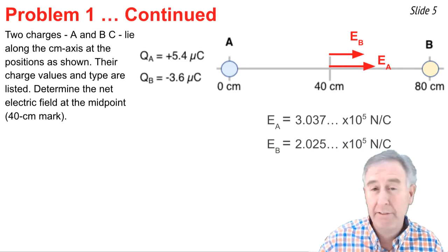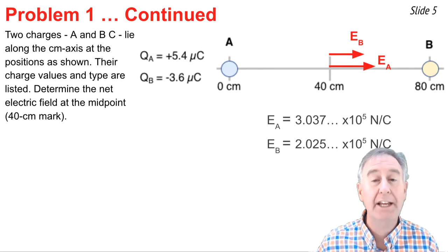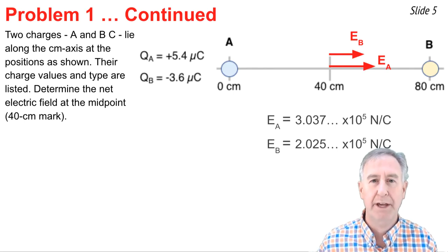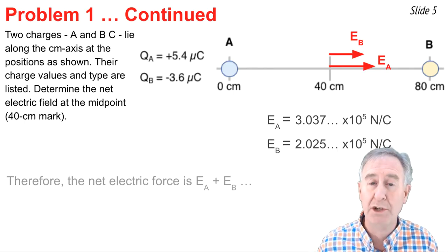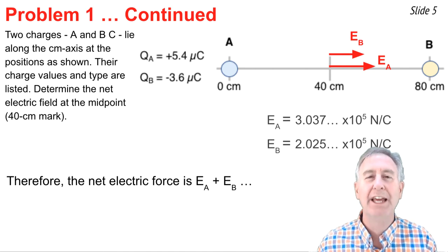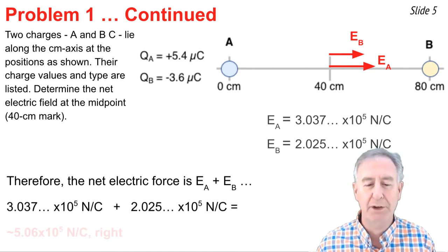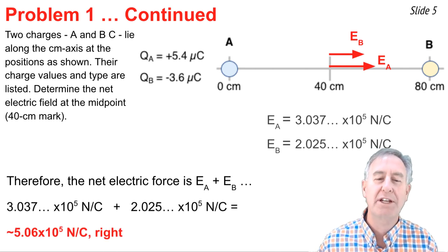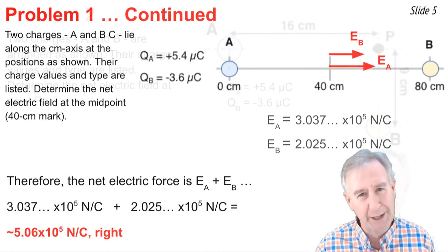Now that I've calculated the values of EA and EB, I can calculate the net electric field values. Since they're headed in the same direction, I simply add them together. And when I do, I end up getting the value 5.06 times 10 to the 5th newtons per coulomb directed rightward.